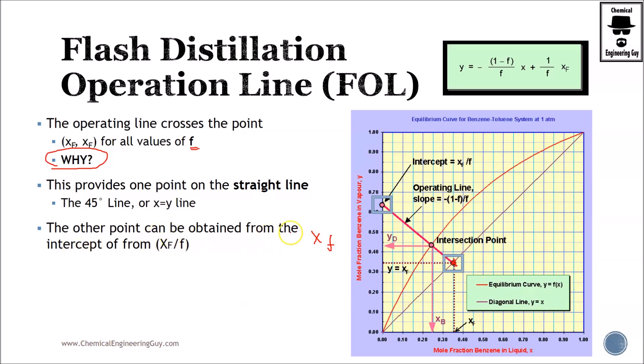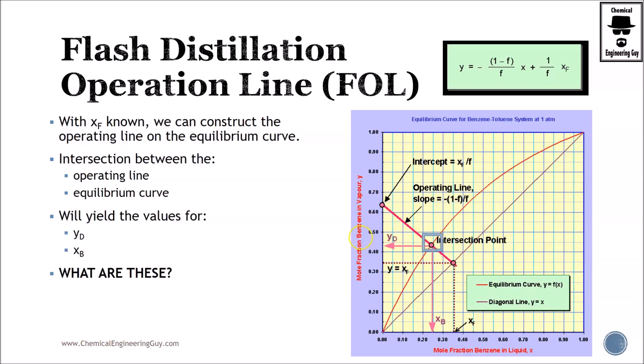The other point can be obtained either from the slope, from the intercept, or from the equilibrium, which is not that normal. The easiest one will be always the intercept, which is this one right here. Two points makes a line. And with that line, you can verify the equilibrium conditions.